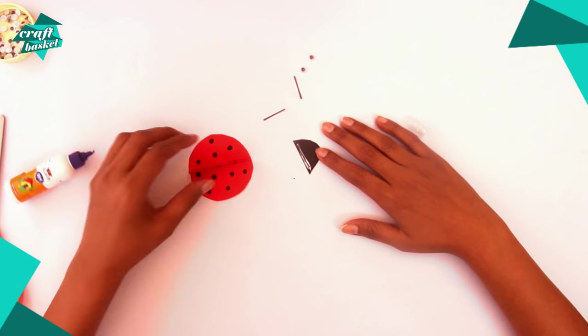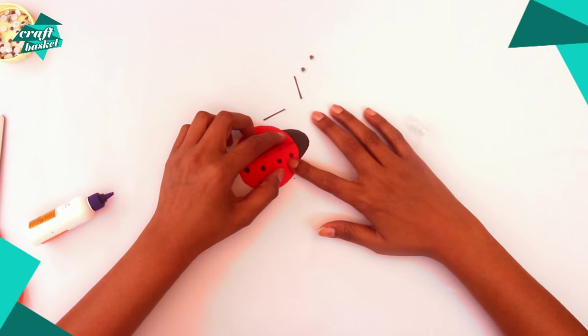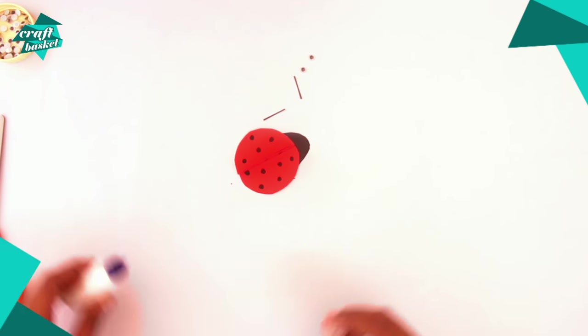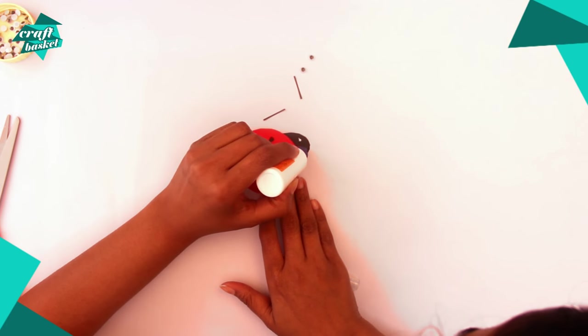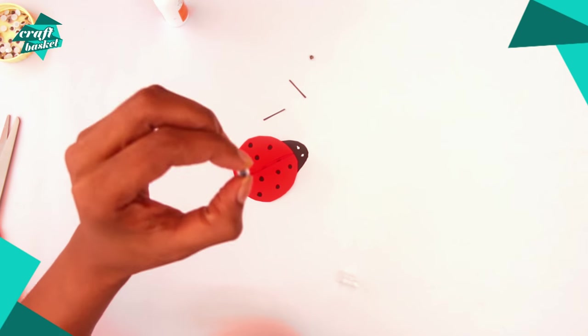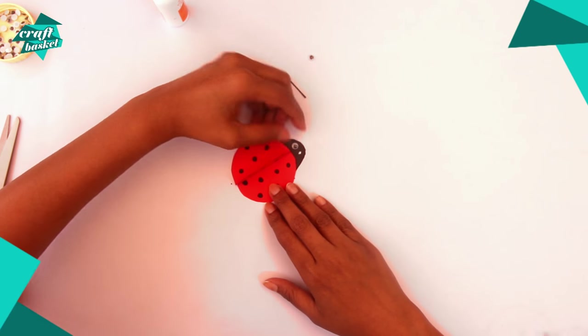And then stick the brown paper in front like this. From here on out, it's easy. Now you just have to stick the eyes and the little antennas.